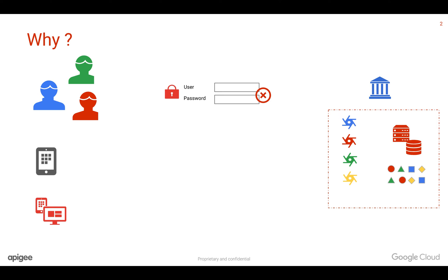Let's take an example. Let's say you are a big bank and you have various services like transferring funds, getting account statements, getting account information, or getting the profile of the customer. You have various services and data stored inside your enterprise. Let's say there is a third party giving you a credit score and the user wants to give access only to the statements where the third party can read the transactions. The user cannot share the username and password with this third party. Doing so, the third party can misuse this information and do fund transfers to some fraudulent accounts. So you cannot give access to your information by just giving away the username and password.